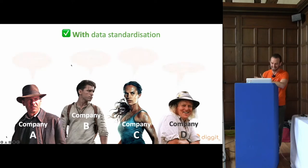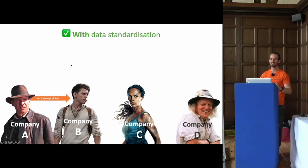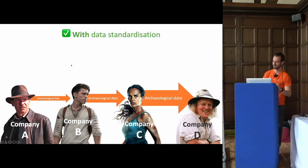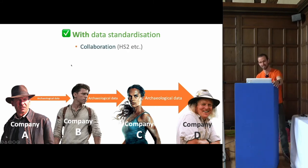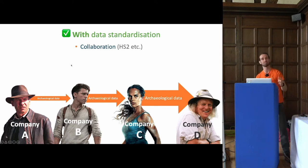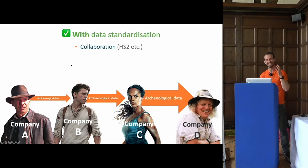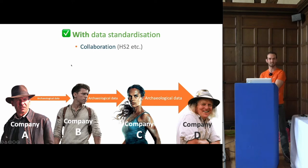When data is standardized it brings significant advantages. The first and most obvious is collaboration. With large infrastructure projects like HS2, collaboration is important — you need a lot of archaeologists and sometimes one company can't provide all of them. With data standardization between two companies working together, they can easily share data as they're recording it and also easily share with clients and other interested third parties.